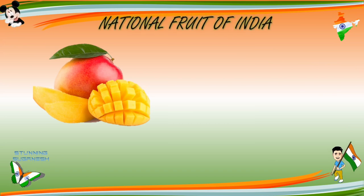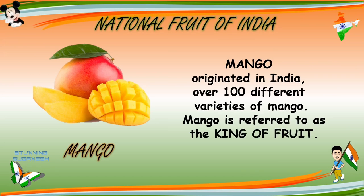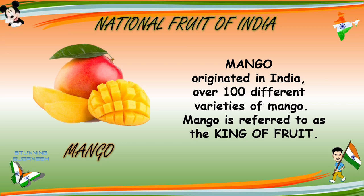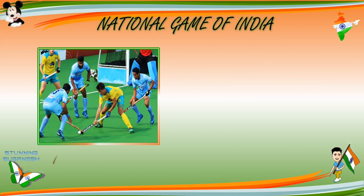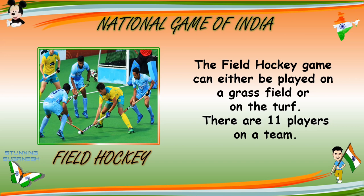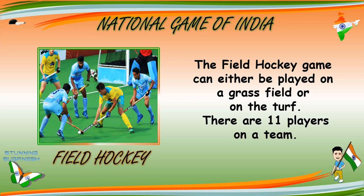National Fruit of India — Mango. Mango was originated in India with over 100 different varieties. Mango is referred to as the king of fruits. National Game of India — Field Hockey. The field hockey game can either be played on a grass field or on the turf, and there are 11 players on a team.